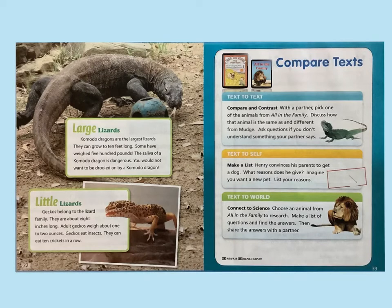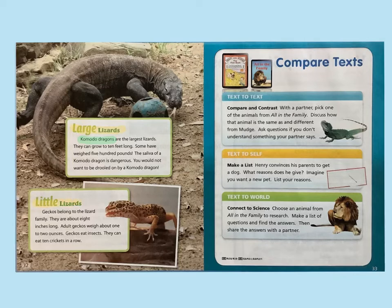Go ahead and turn the page. Large Lizards: Komodo dragons are the largest lizards. They can grow to 10 feet long. Some have weighed 500 pounds. The saliva — that means the spit from their mouths — of a Komodo dragon is dangerous. You would not want to be drooled on by a Komodo dragon! Little Lizards: Geckos belong to the lizard family. They are about eight inches long. Adult geckos weigh about one to two ounces — they're really small. Geckos eat insects; they can eat 10 crickets in a row.